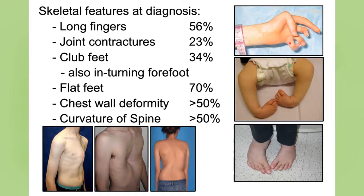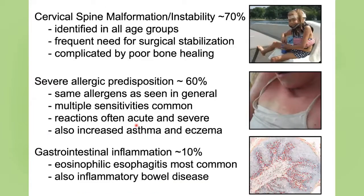Skeletal features are highly prevalent: long fingers, joint contractures, club foot in about a third. Most have flat feet and some flavor of chest wall deformity, including pectus carinatum or pectus excavatum. Scoliosis is quite common. Importantly, quite a few people with Loeys-Dietz syndrome have some form of cervical spine malformation or instability, identified in all age groups. Many require surgical stabilization of the spine, and repair can be complicated by poor bone healing. At diagnosis, we recommend flexion and extension neck films to look for malformation or instability, and this should certainly be performed before the first general anesthesia and before intubation.